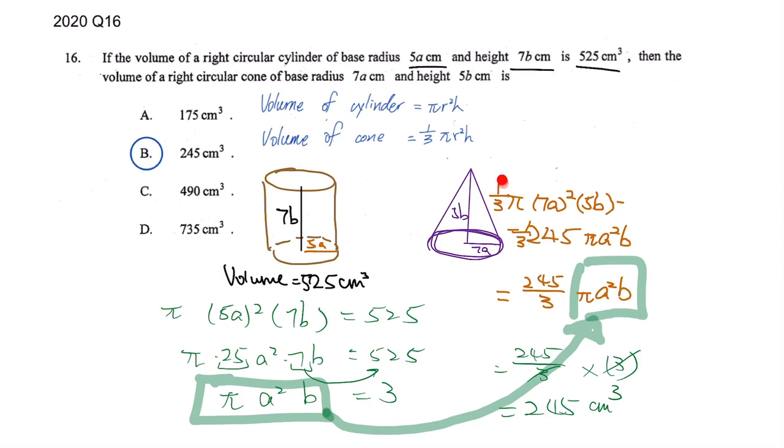So all for the pyramids or cones you need 1 over 3 for the volume. And because if you don't have that you can get the answer wrong very easily.